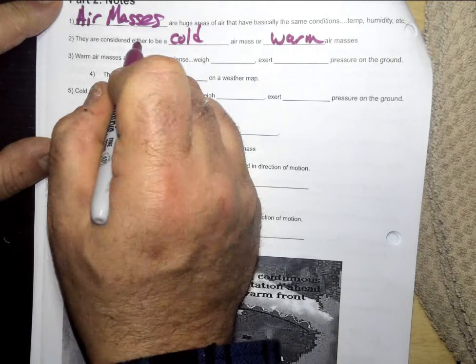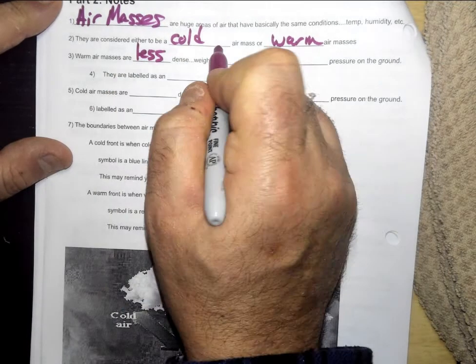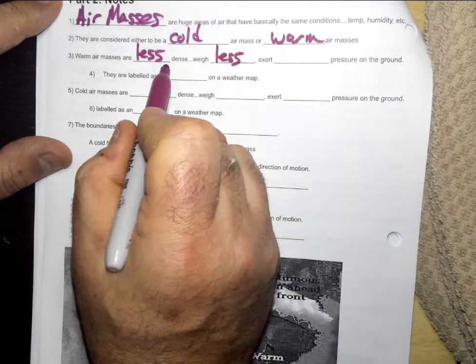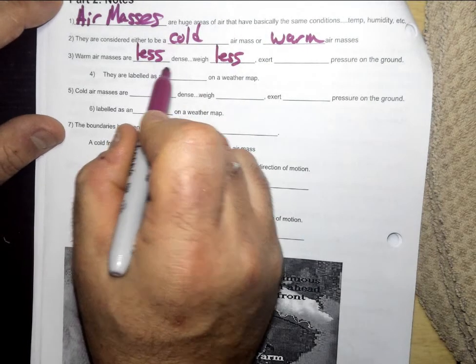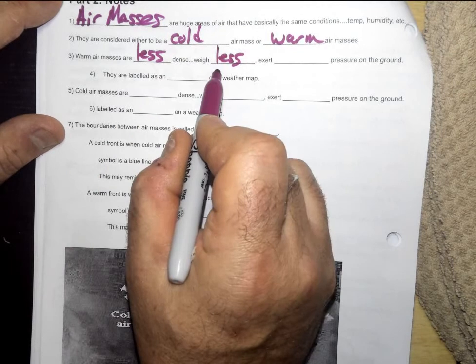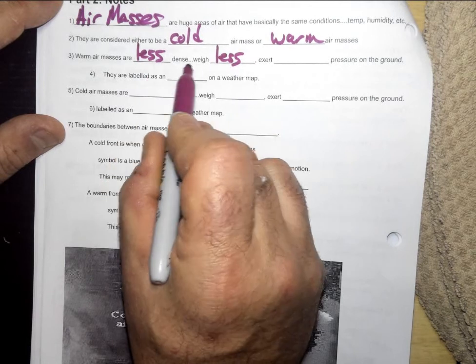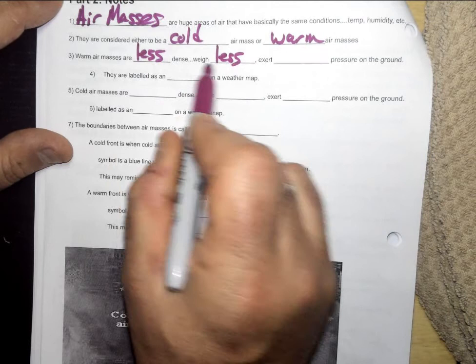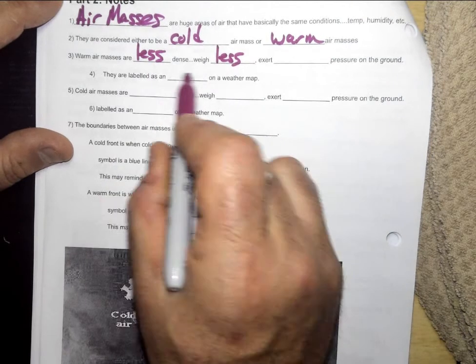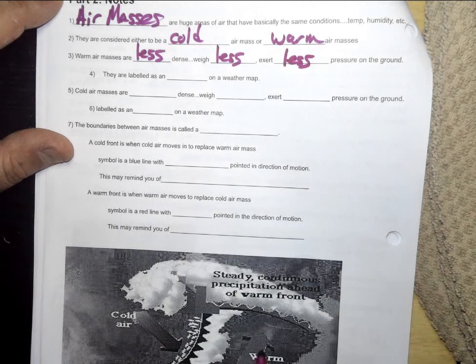Warm air masses are less dense. In other words, they weigh less. Density is how compact things are. Weight is how much gravity pulls down. So if you have less dense air, each gallon is going to weigh less than the other kind. If it has less density, it weighs less, it's going to have less pressure on the ground, less weight pushing down.